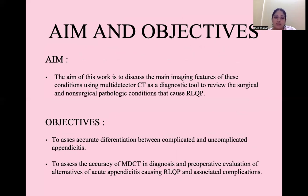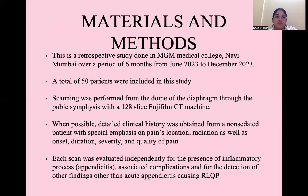The objectives are to assess accurate differentiation between complicated and uncomplicated appendicitis, and to assess the accuracy of MDCT in diagnosis and preoperative evaluation of alternatives of acute appendicitis causing right lower quadrant pain and associated complications. This is a retrospective study done in MGM Medical College over a period of 6 months; a total of 50 patients were included. It was performed on a 128-slice CT machine. Whenever possible, detailed clinical history was obtained with special emphasis on pain location, radiation, onset, duration, severity, and quality of pain. Each scan was evaluated independently for the presence of inflammatory processes, associated complications, and for detection of findings other than acute appendicitis.